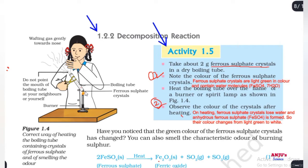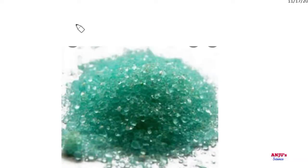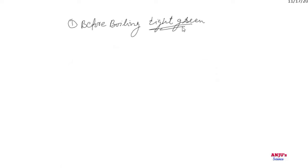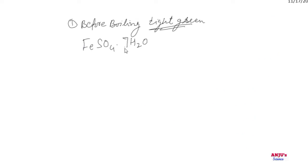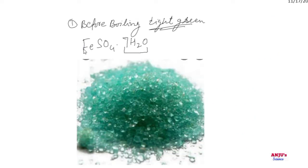When we heat ferrous sulfate crystal, we observe that before boiling the color of ferrous sulfate was light green. Why was it light green? Because ferrous sulfate crystal contains seven molecules of water, and because of these seven molecules of water, the color of ferrous sulfate was green.